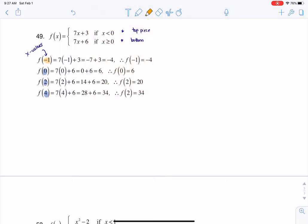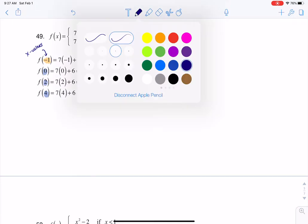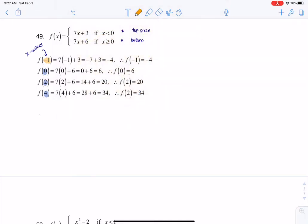So negative 1. If x is negative 1, would I plug that into the top piece or the bottom piece? Well, is negative 1 less than 0, or is negative 1 greater than or equal to 0? I think you'll give me that negative 1 is less than 0, which is telling me go top piece. So if I plug negative 1 into the top piece, that's why you see 7 times negative 1 plus 3, because I'm plugging in negative 1 for x.